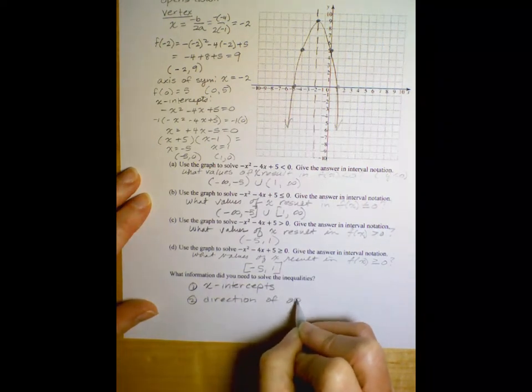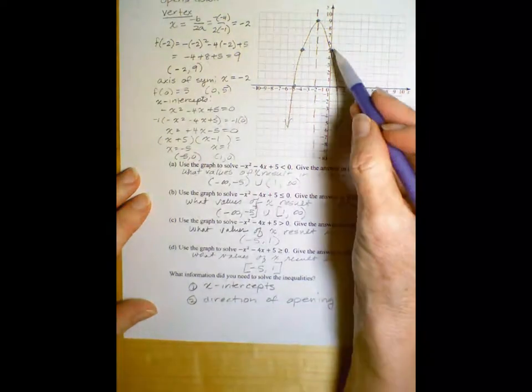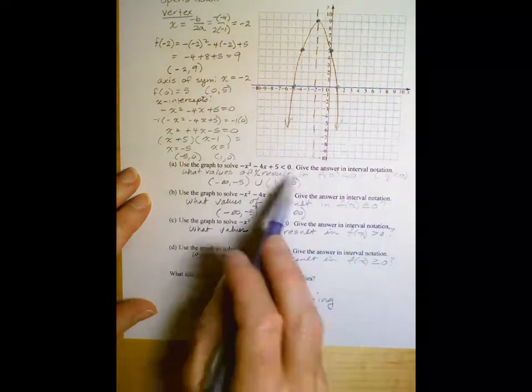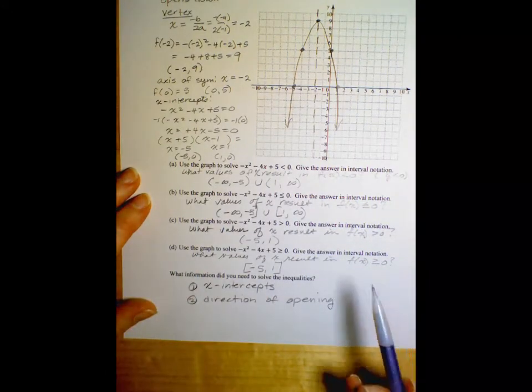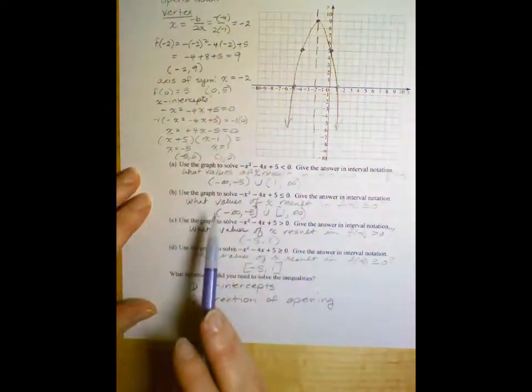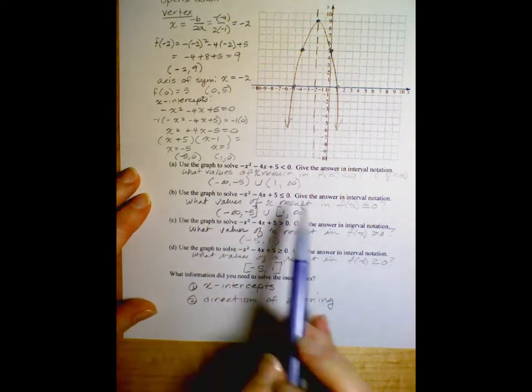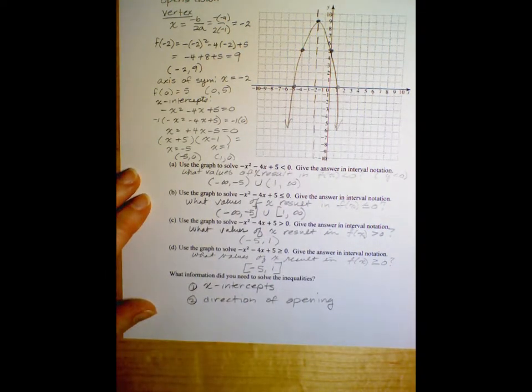Think of it if we had opened up, would that have changed anything about our answer? Yes, it would. So we need the x-intercepts and we need the direction of opening. That does make a difference in our answer. But where the vertex is, where the y-intercept is, none of those things are necessary for us to answer these questions. So as we go to the next, look at some examples, we're not going to have to find all this information. We're going to want to know the direction of opening and the x-intercepts, and then we can answer the inequality.